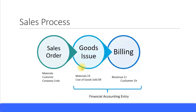When you are issuing the goods to the customer — moving the finished goods products from your store and issuing them to the customer — there is a movement of inventory, hence financial accounting starts here. Your finished goods or inventory materials account is credited and your cost of goods sold account is debited; this hits your P&L and your balance sheet. Then after the goods issue you do the billing process, where a revenue account is credited and your customer receivable account is debited.